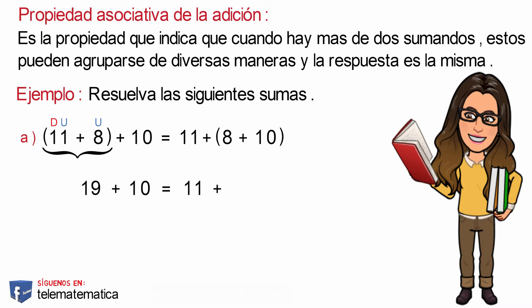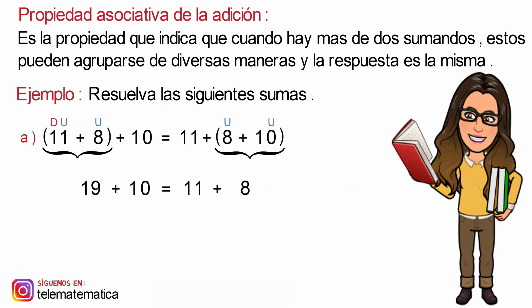Y esto va a ser igual a 11 más... Resolvemos lo que se encuentra dentro de los paréntesis al lado derecho. De igual forma, identificamos la cifra de la unidad en los números y sumamos: 8 más 0 es igual a 8. Y la cifra de la decena la dejamos como 1, y nos quedaría 18. Resolvemos lo que se encuentra a ambos lados del símbolo de igualdad.